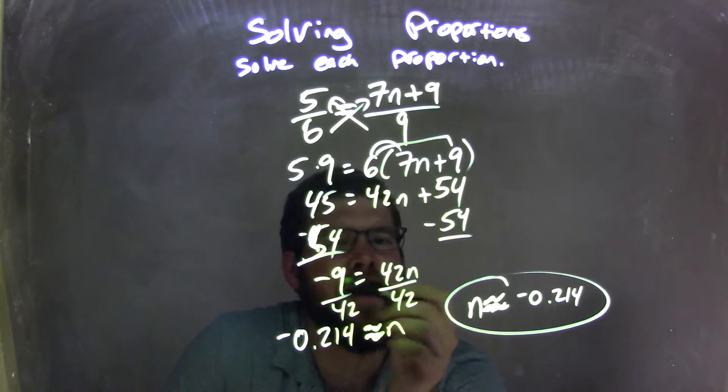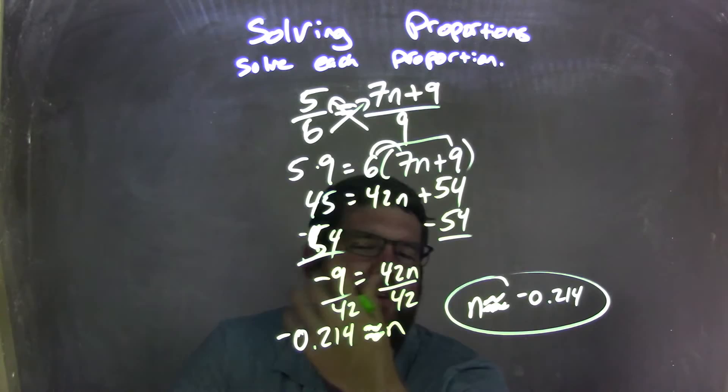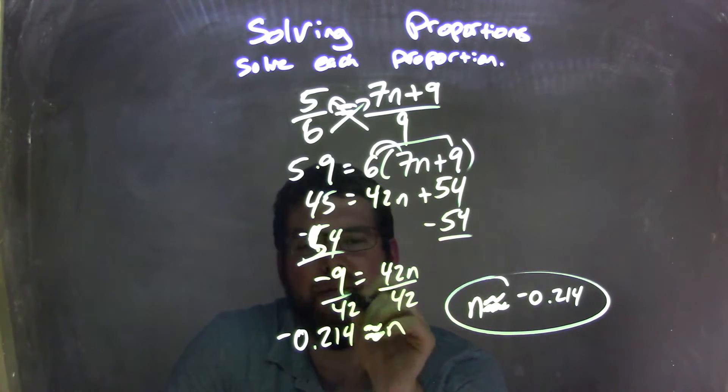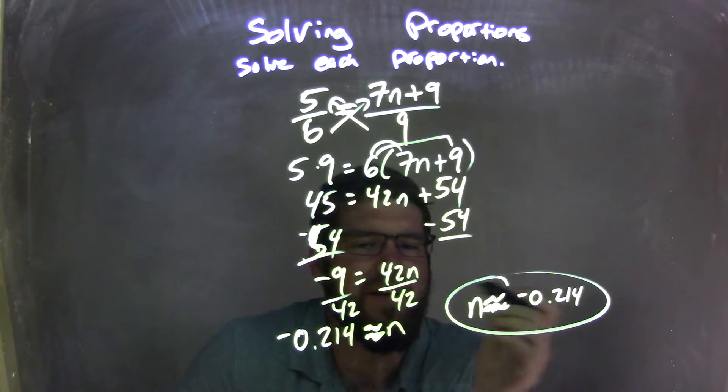I then subtracted 54 from both sides, leaving me with negative 9 equals 42n, divided by 42, use my calculator, negative 9 divided by 42, negative divided by positive is a negative, giving me a final answer here of negative 0.214.